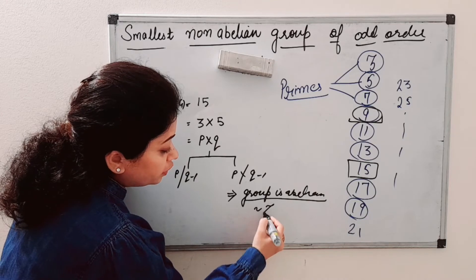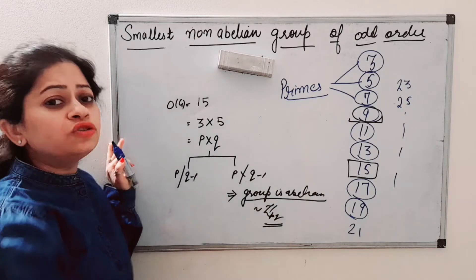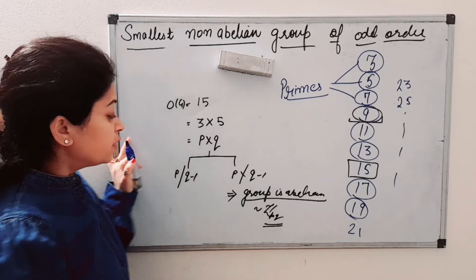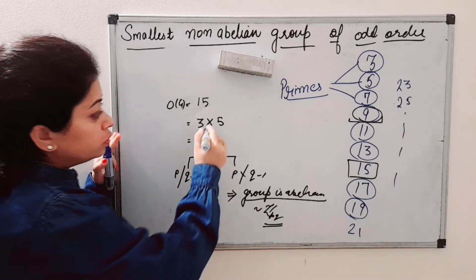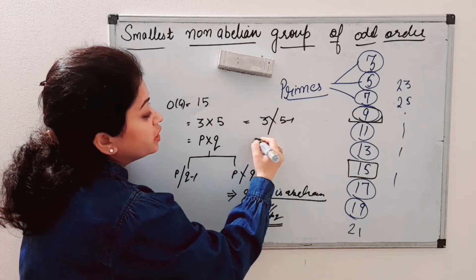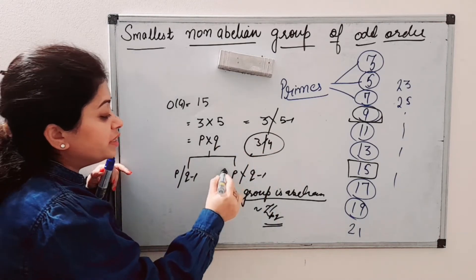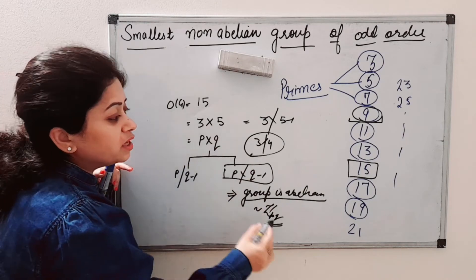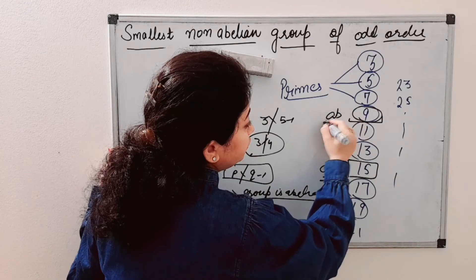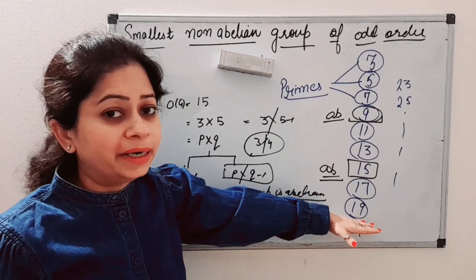There exists only one group of order pq when p doesn't divide (q − 1), and that group is cyclic and abelian, isomorphic to Z_pq. You can find videos on my channel for the proofs. For order 15: 3 does not divide (5 − 1) = 4, so the group of order 15 falls in this category and is abelian.